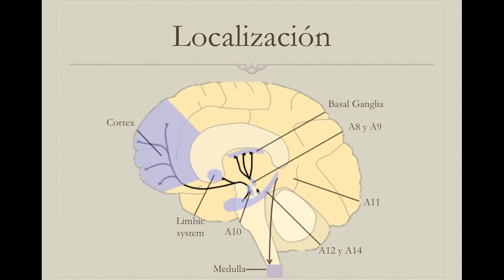A10 is the ventral tegmental area, which projects to the limbic system and the cortex — this is the entry point for the reward system and creates reward-related behavior. A11 is very important because it projects to the medulla and the spinal cord, modulating signals between the brain and the periphery; it's important for pain and precise movements. A12 and A14 are hypothalamic nuclei that control hormone secretion.